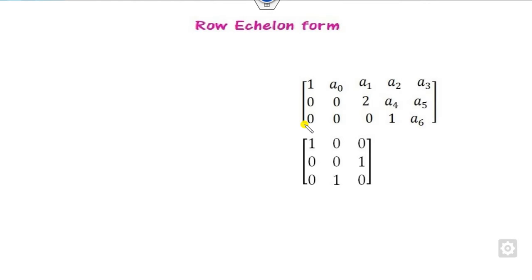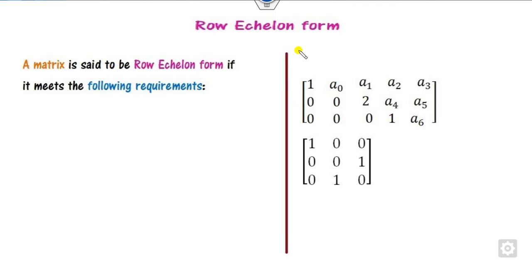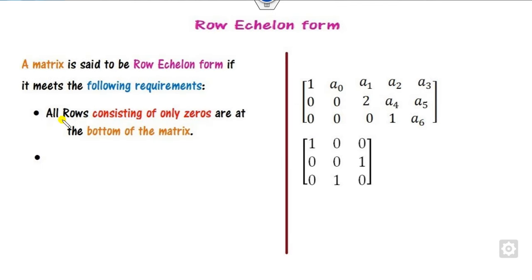What is the meaning of the row reduced echelon form? Firstly, we will understand what the row echelon form is. When can any matrix be said to be in row echelon form? When it satisfies certain properties.